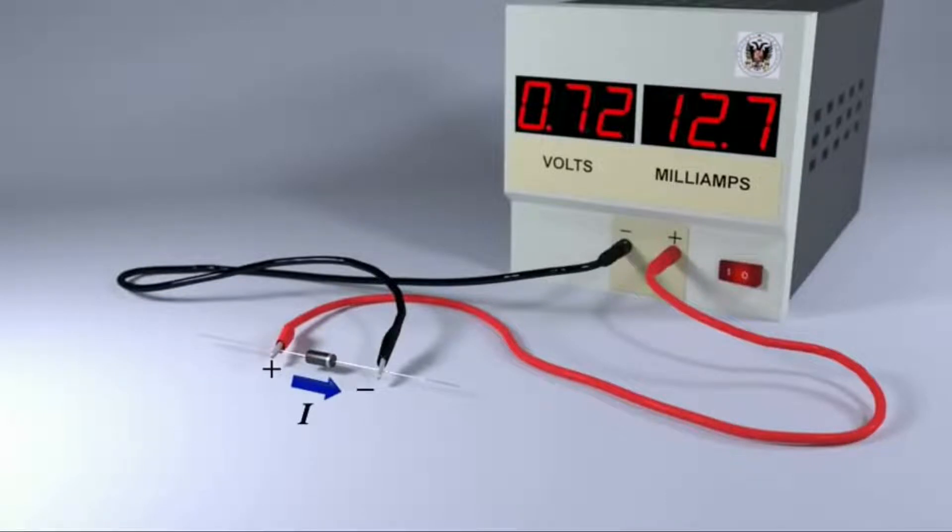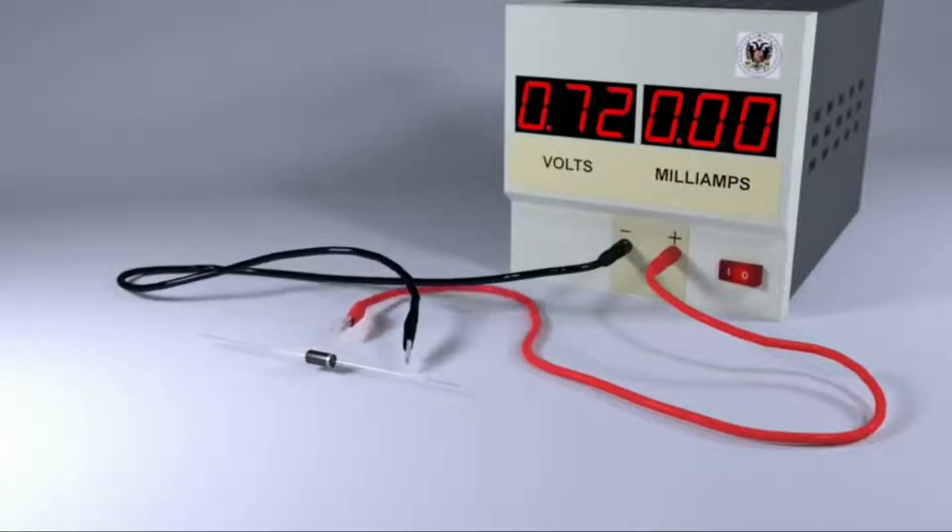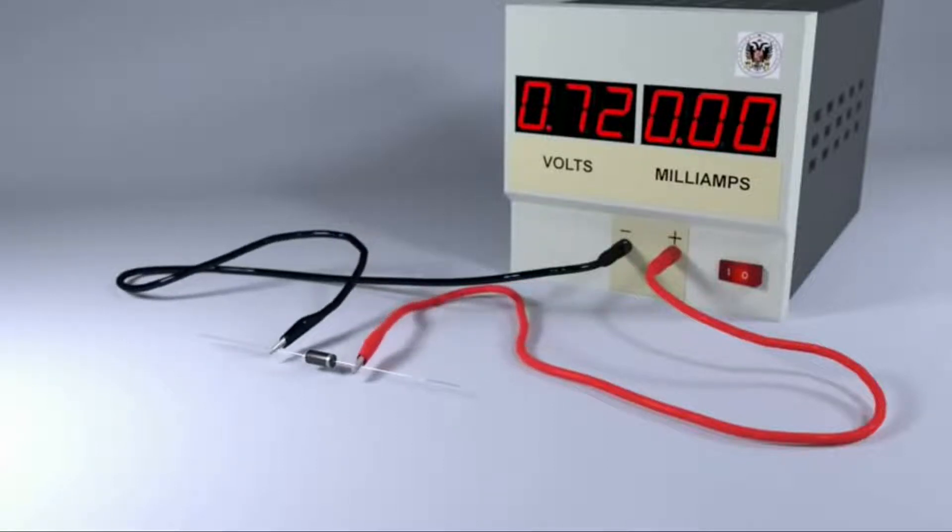If anode has higher potential than cathode then the diode is said to be in forward bias and it allows current to flow. If cathode has higher potential than anode then the diode is said to be in reverse bias and it doesn't allow current to flow.